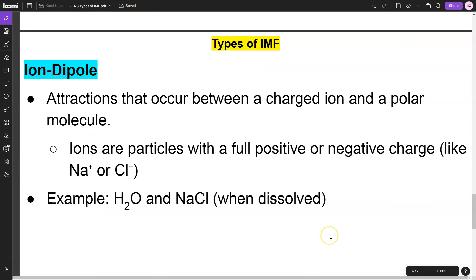The final type of intermolecular force we're going to discuss is ion-dipole. Ion-dipole is an attraction that occurs between a charged ion and a polar molecule. This only occurs with polar molecules. If you forgot, ions are particles with a positive or negative charge, like sodium with a +1 charge or chlorine with a -1 charge.